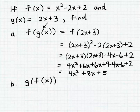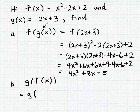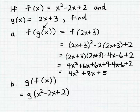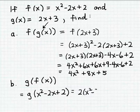Now let's do the same operation in reverse and calculate g of f of x. Where we have f of x, we substitute the formula for f of x, which is x squared minus 2x plus 2. So where I have f of x, I substitute its formula to get g of (x squared minus 2x plus 2). To simplify, I take the expression x squared minus 2x plus 2 and substitute it for input variable x in the formula for g. That gives me 2 times (x squared minus 2x plus 2) plus 3.